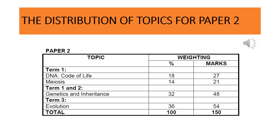The different topics for Paper 2 will be as follows: DNA Code of Life — 27 out of 150 marks; Meiosis — 21 marks; Genetics and Inheritance — 48 marks; and Evolution — 54 out of 150 marks.